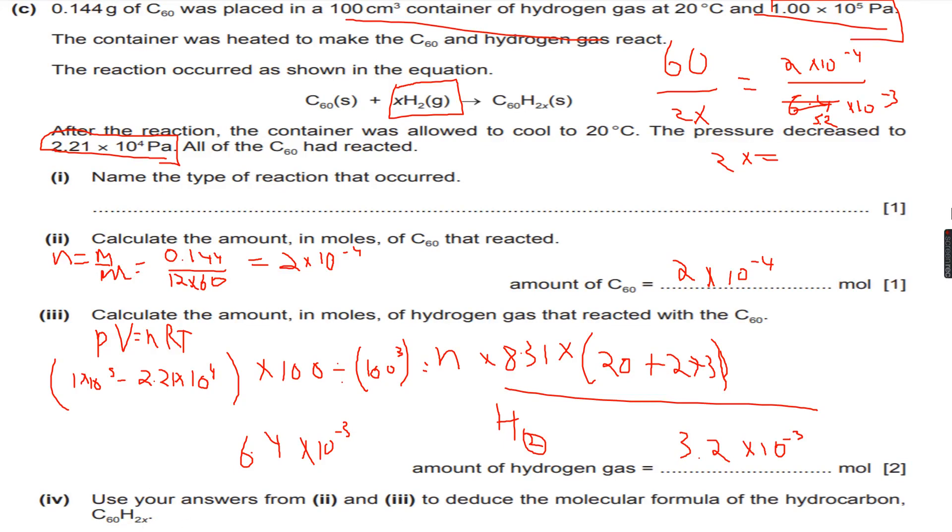When you do the calculation you will get C60H32 because this ratio, which is 2×10^-4 to 3.2×10^-3, is 1 is to 16.